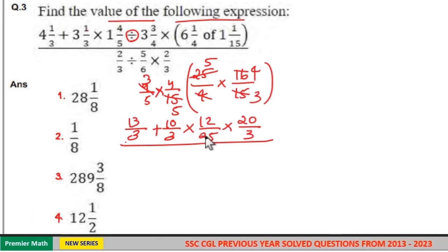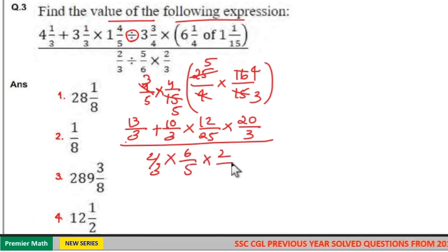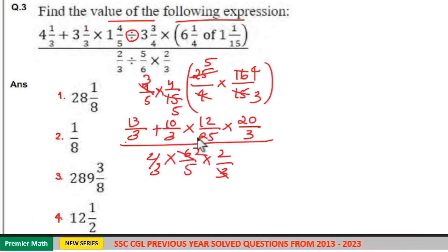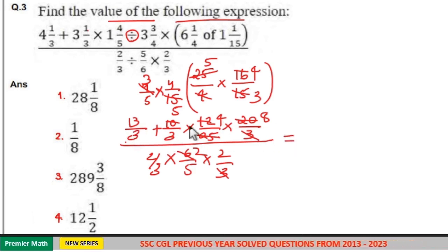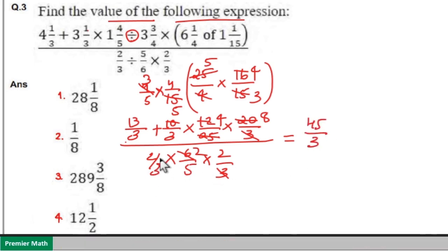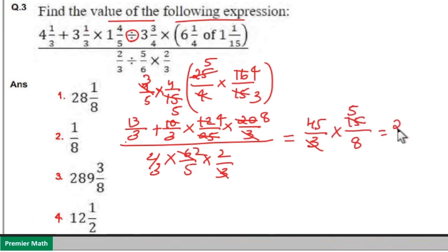In the denominator you have 2 by 3. Writing the division as multiplication and reversing: 6 by 5 into 2 by 3. 3 goes 2 times in 6, giving 8 by 15 in the denominator. Then 25 goes 8 times in 200, 3 goes 4 times in 12, giving 32 by 3. So 32 by 3 plus 13 by 3 — denominator is common, giving 45 by 3. In the denominator we have 8 by 15, written as 15 by 8. 3 goes 5 times in 15, so 45 into 5 is 225 by 8.